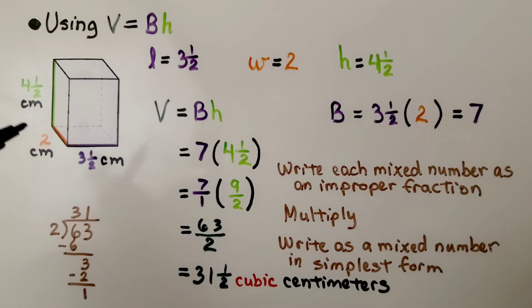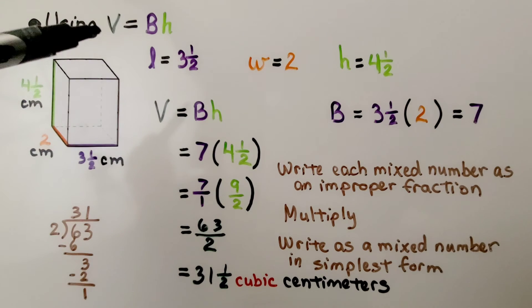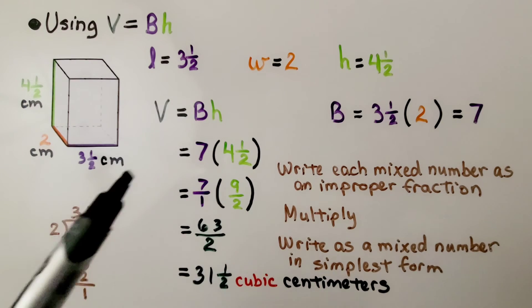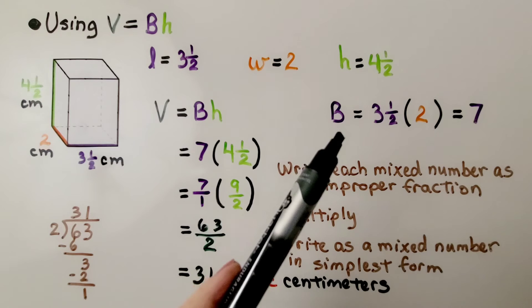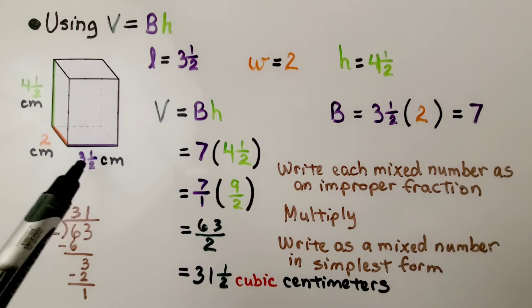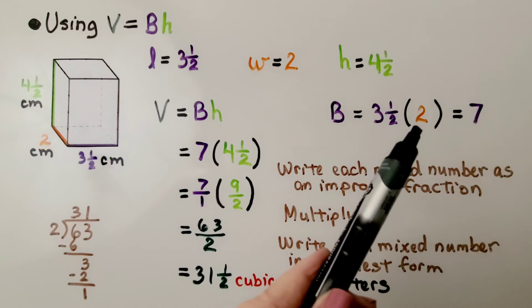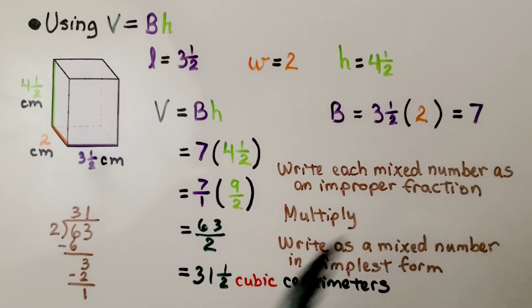We have the same rectangular prism, but we're going to be using V equals BH. We have the same measures. So what we're going to do is find out what this capital B is. It's going to be this length times that width. So we have three and a half times two.